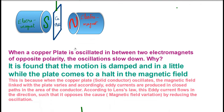What is the reason for slowing down of the oscillation? When the copper plate oscillates, the magnetic field linked with the plate varies and accordingly, eddy currents are produced in closed paths in the area of the plate. According to Lenz's law, the eddy current flows in a direction such that it opposes the cause — the cause being the magnetic field variation inside the copper plate — by reducing the oscillation.